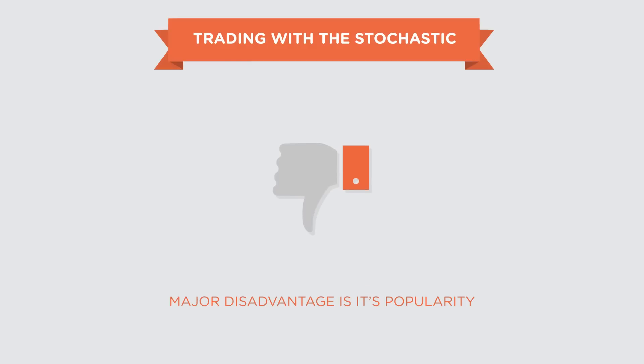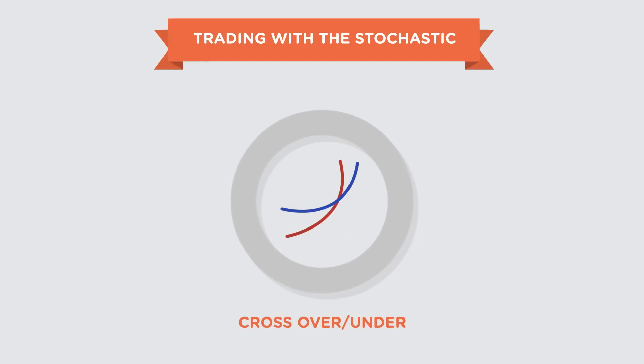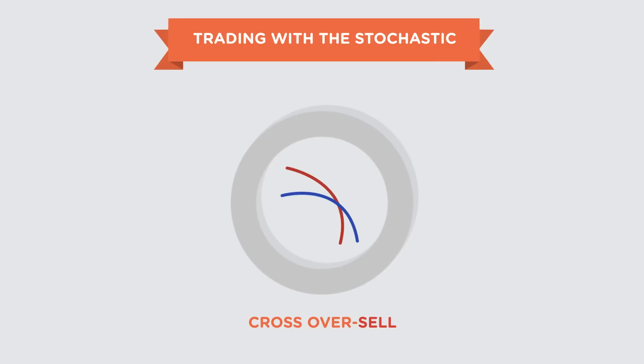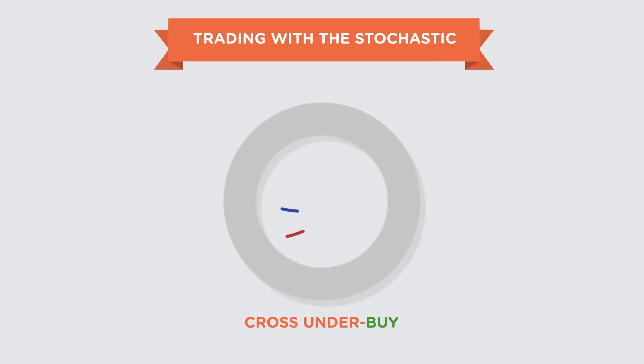What I'll show you is one strategy you can use with the stochastic. By now you've probably become an indicator pro, so understanding crossovers and cross-unders should not be difficult at all. You can trade the stochastic using crossovers just like we learned with the moving averages — when a crossover happens we sell, and when a cross-under happens we buy.